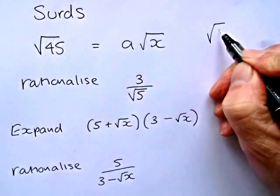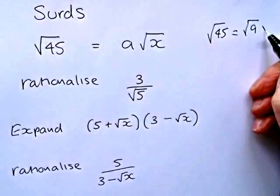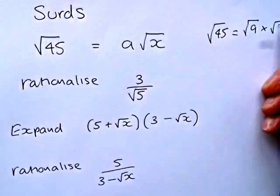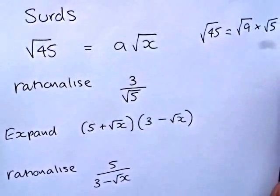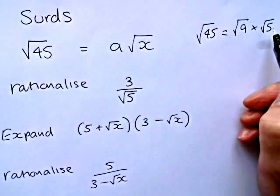Root 45 is exactly the same as root 9 times root 5, and we know that nine fives are 45, so we can break that down to nine times five and then separate.